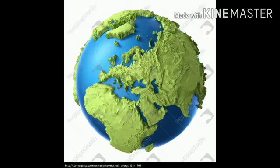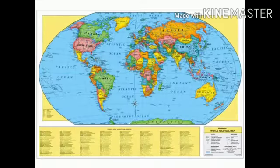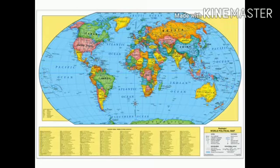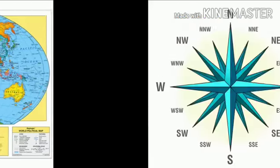A model of earth is called a globe. We can rotate it to see different places. A map is a drawing of a part of the earth or the whole earth. A book of maps is called an atlas.